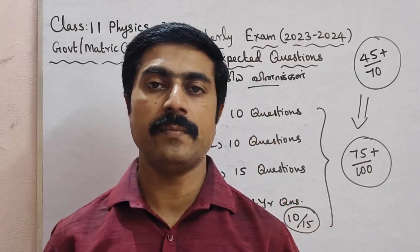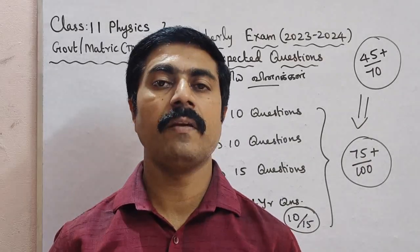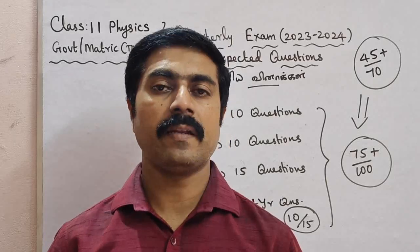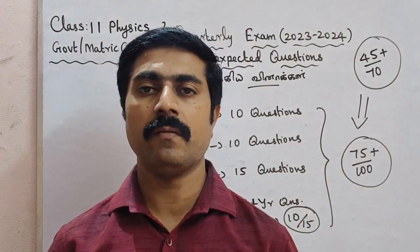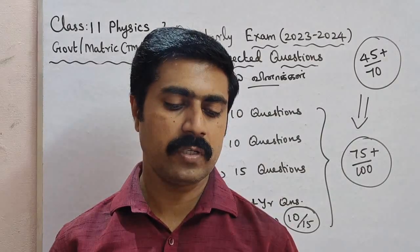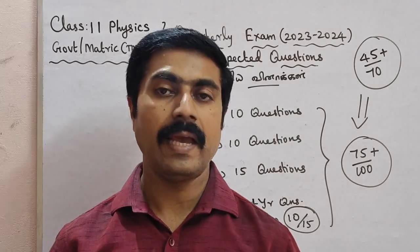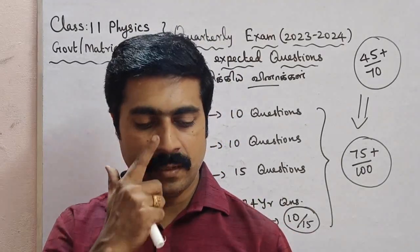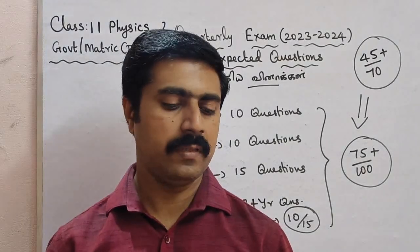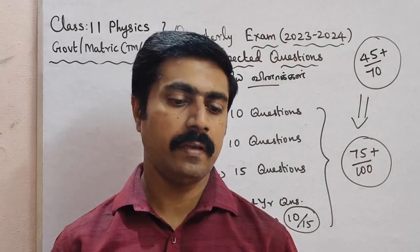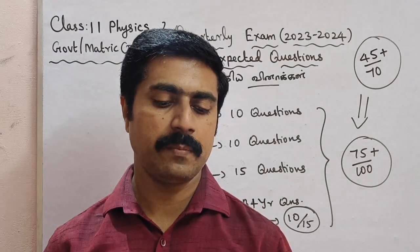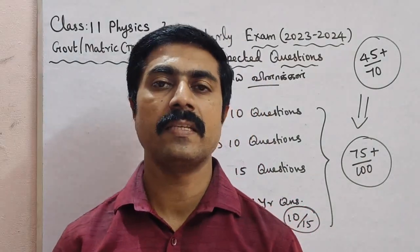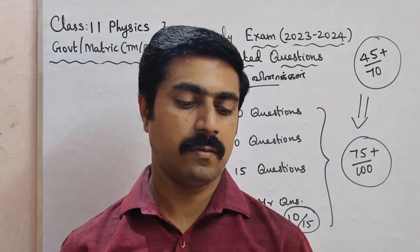Second question: explain various types of errors. From Unit 1 and Unit 2 — two questions. Third question: explain triangle law of vector addition. Fourth question: kinematic equations of motion for constant acceleration — uniform acceleration. Fifth question: explain the work-energy principle.